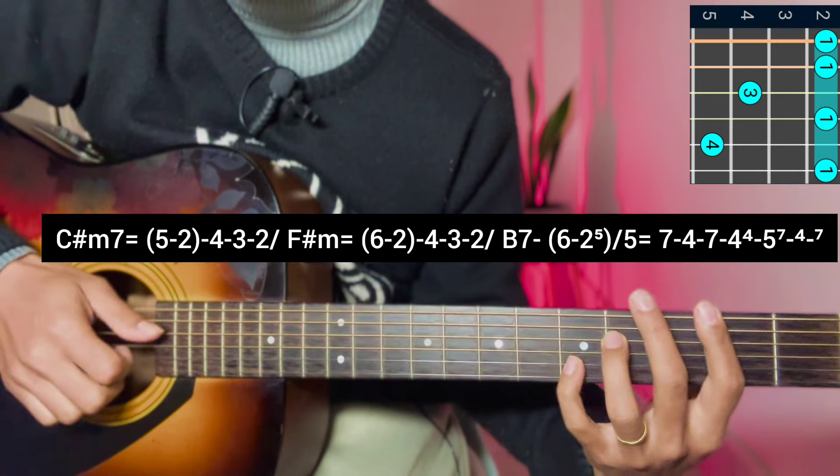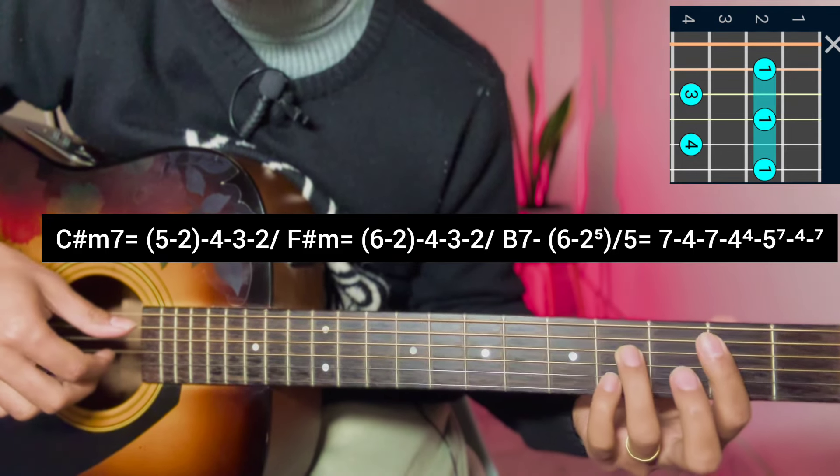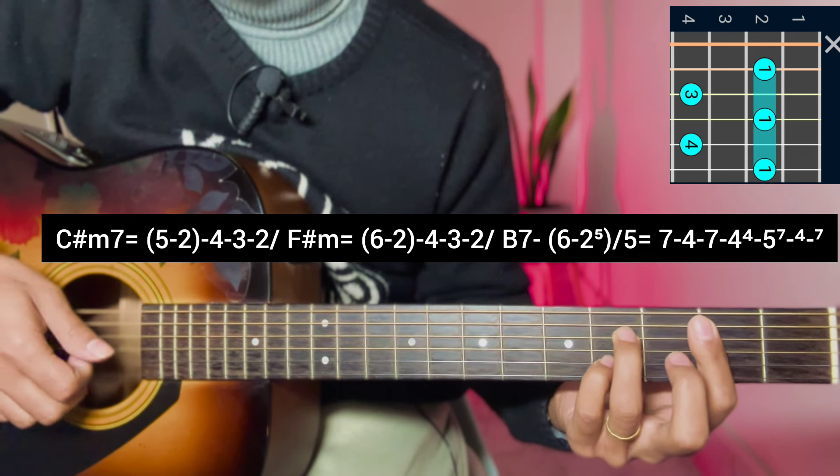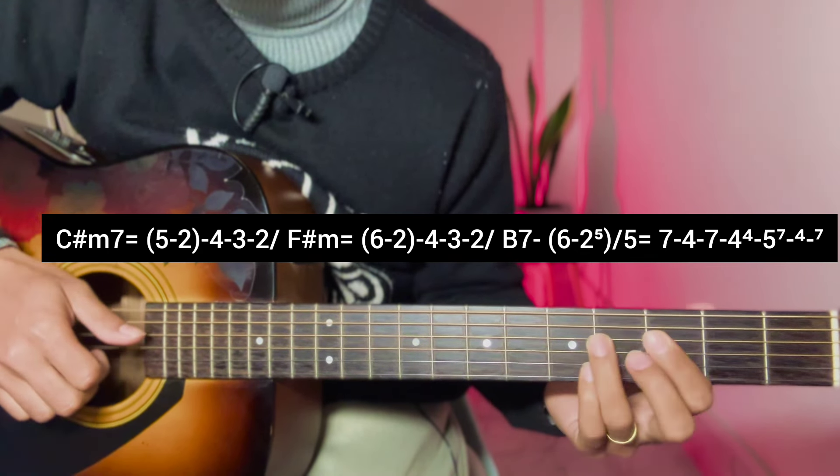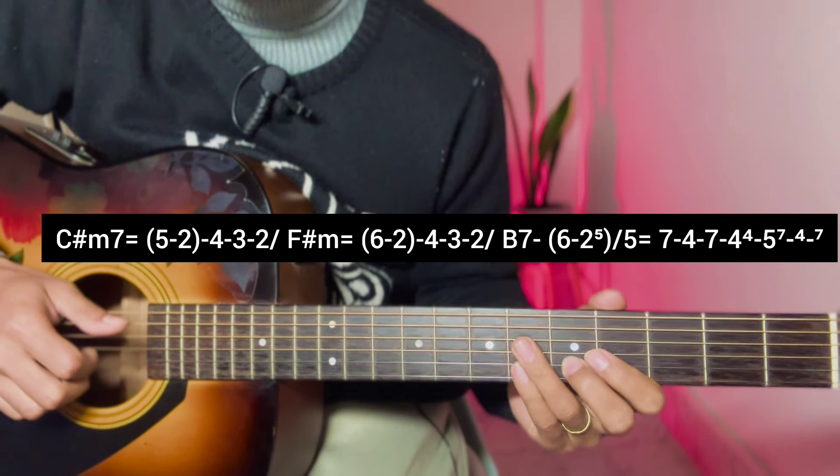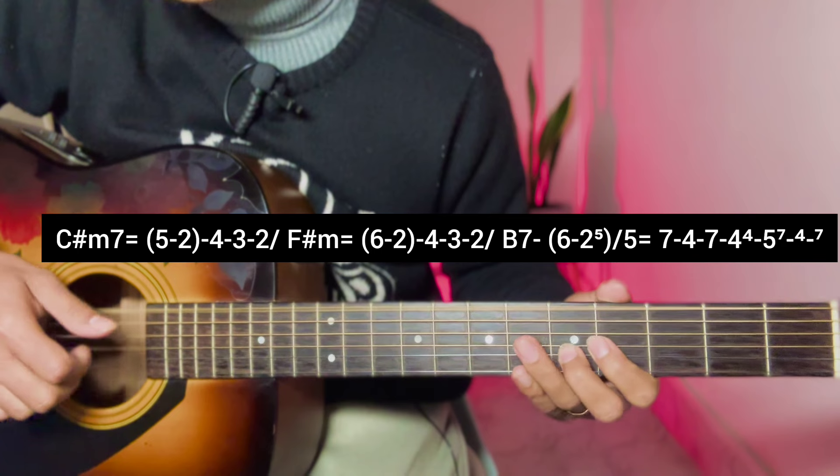I am going to play the fifth fret. This is the second fret of B7 chord. After the fifth string, pick four, three, two, block. And last, press the fifth string and press the sixth string open E. Then the sixth string pick.